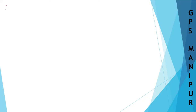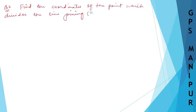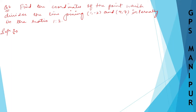Question number 2, Exercise 11.1. The question says: find the coordinates of the point which divides the line joining (1, -2) and (4, 7) internally in the ratio 1:2. So there is a line with coordinates (1, -2) and (4, 7), and there is a point which divides the line segment in the ratio 1:2.